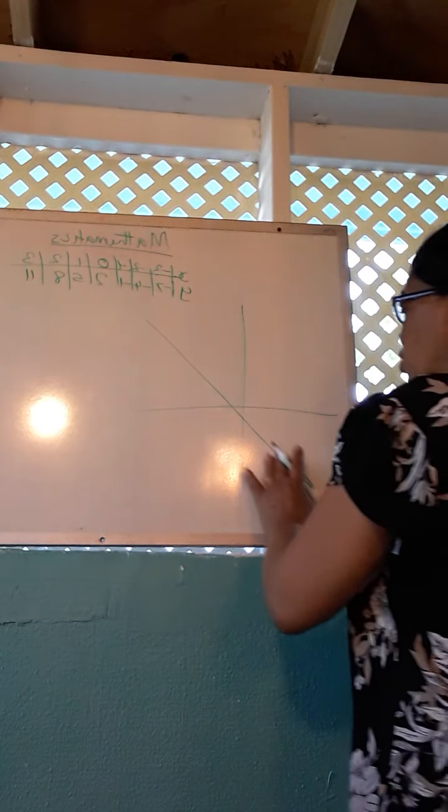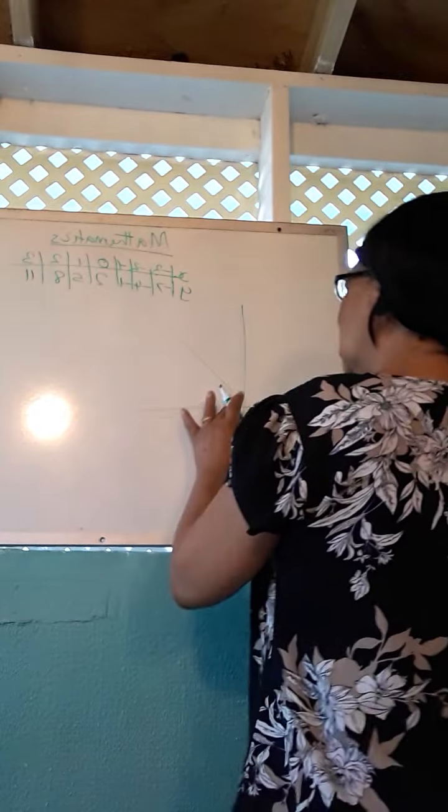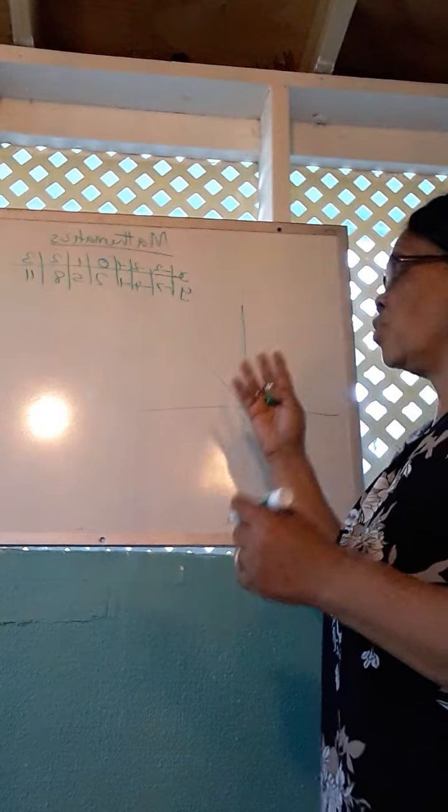And the next thing for us to do is to find, I'm trying to make this a little bit straighter. The next thing that they're going to require us to do is to be able to find a gradient of the graph.